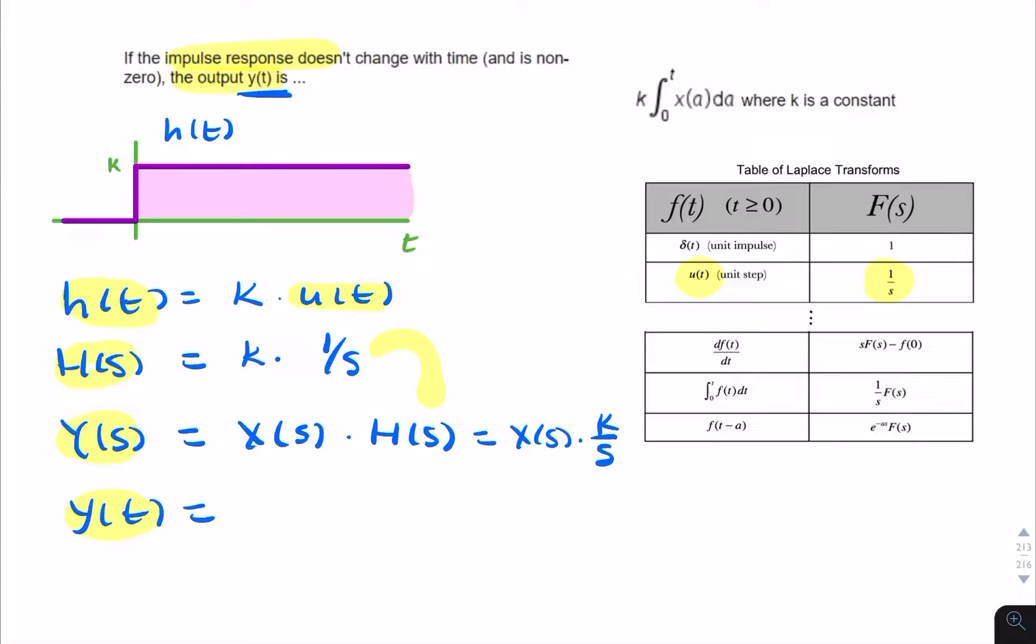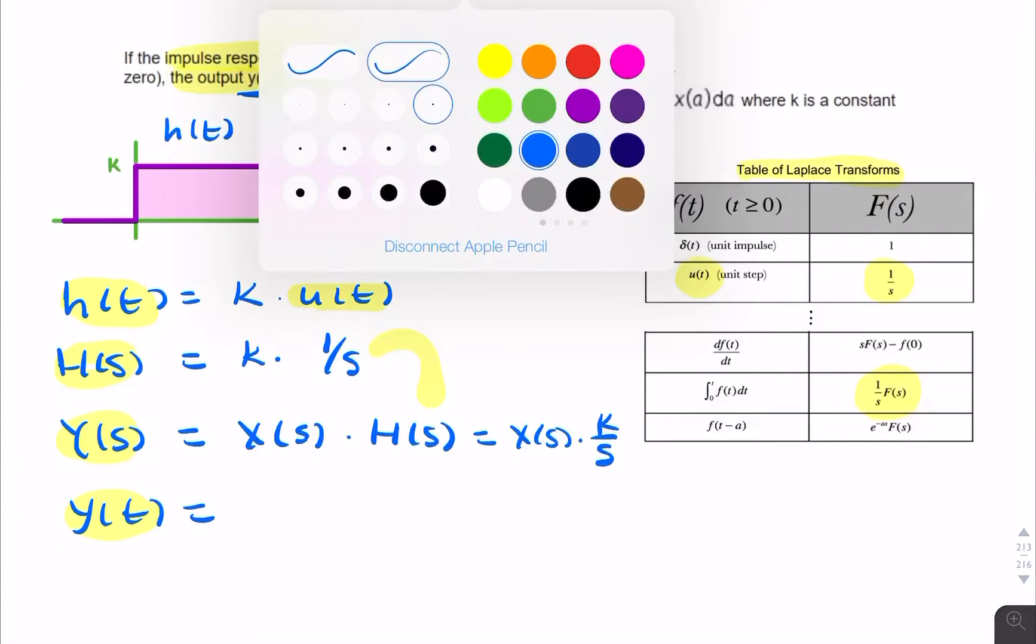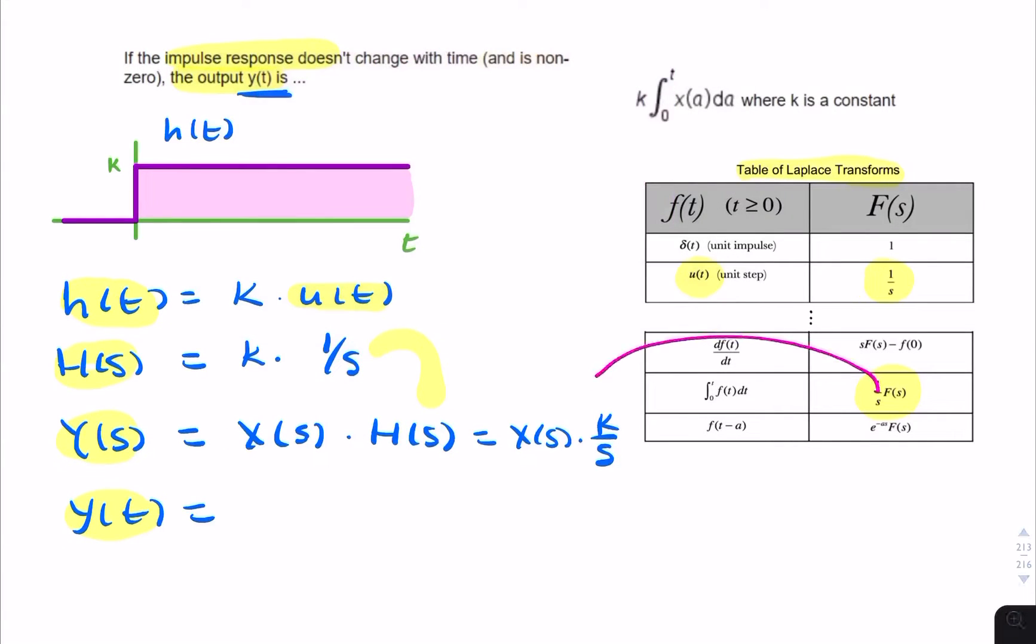And then to find Y of T, we would simply use the table again. And there we have something very similar to that. So 1 over S, F of S. Here we have K over S, X of S.